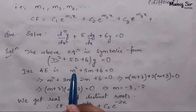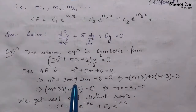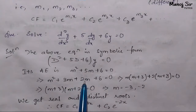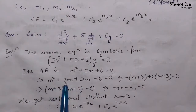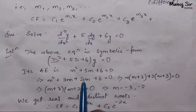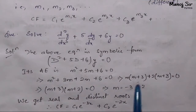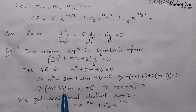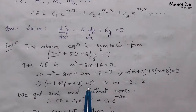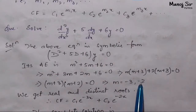On solving this equation, we split 5m as 3m + 2m. Taking m common: m(m + 3), then taking 2 common from the remaining terms: 2(m + 3), giving (m + 3)(m + 2) = 0. Therefore m = −3 and m = −2.